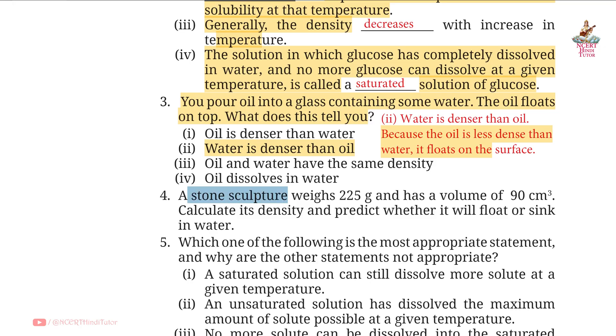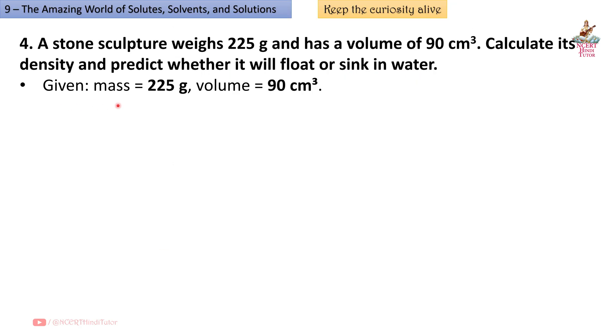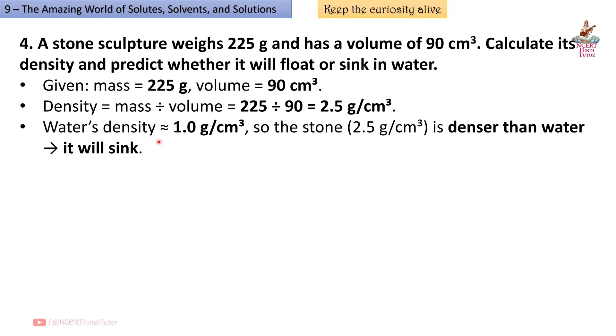Question 4: A stone sculpture weighs 225 gram and has a volume of 90 centimeter cube. Calculate its density and predict whether it will float or sink in water. Answer: Given mass equals 225 gram, volume equals 90 centimeter cube. We know density equals mass divided by volume, so 225 divided by 90 equals 2.5 gram per centimeter cube. Water's density approximately 1 gram per centimeter cube, so the stone 2.5 gram per centimeter cube is denser than water, it will sink.